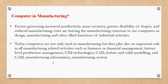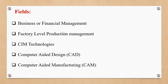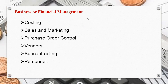CAD and CAM relate to productivity. Business or financial management covers factory level production management and CIM. Under financial management: costing, sales and marketing, purchase control, vendor management, subcontracting, and dispersing costs.